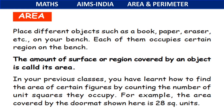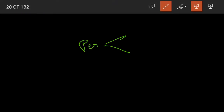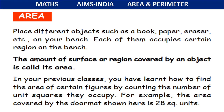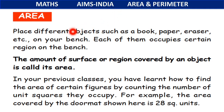Now moving on to the next topic, that is area. Till now we discussed about the perimeter of square and rectangle. The chapter's name covers both area and perimeter. As we have finished the perimeter part, let us now learn about the area of square and rectangle.